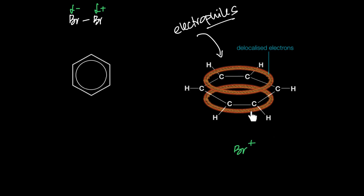A second key difference: alkenes undergo addition reactions, but benzene, because the ring is very stable, does not undergo addition reactions. Instead, benzene undergoes substitution reactions, because it wants to reclaim the ring. The intermediate forms a carbocation, and then benzene kicks out the substituent so the ring is restored. So benzene undergoes substitution reactions while alkenes undergo addition reactions.